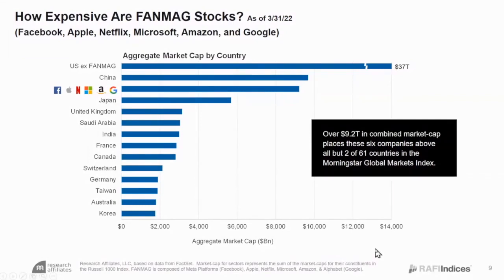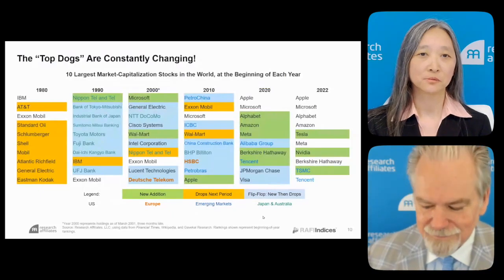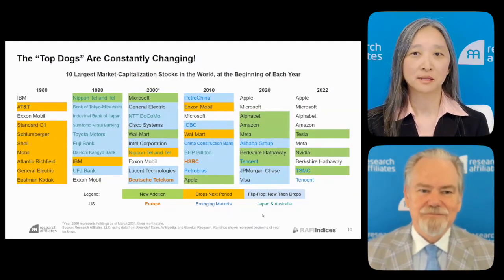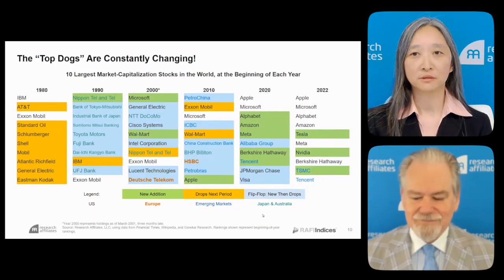They are very expensive — priced for perfection. Priced as if those six companies will be a larger part of the future global economy than any country in the world except China. That is a huge bet. Weighting by cap is like driving by looking at the rearview mirror — it works when the road is straight, but once the road starts to turn, you get accidents.